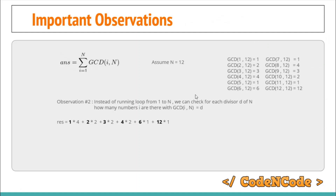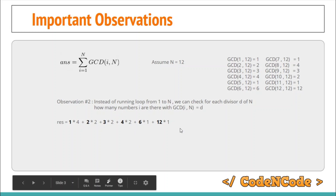The conclusion was: instead of running a loop from 1 to N, we run a loop over only the divisors of N, because the GCD of any number with N is going to be one of its divisors. It is better to look at each divisor and count how many numbers have that GCD — for example, how many numbers from 1 to 12 have GCD equal to 4 with 12. We see there are two such numbers, so instead of a full loop we directly count and multiply by 4, giving their contribution to the total sum. This way we can calculate the overall sum in O(√n) time.